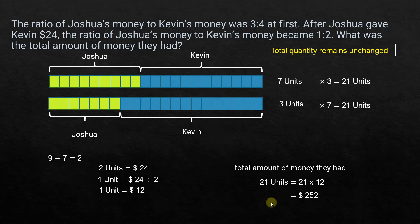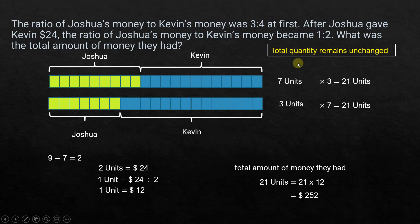The key strategy here is to find what does not change. In this case, we found that the total quantity remains unchanged, and we used that as a technique to solve this problem using the model method. Now let's go ahead and check out how we can solve the same problem using algebra.